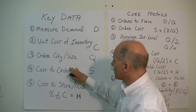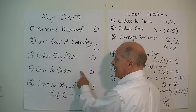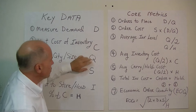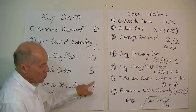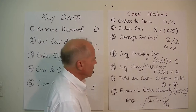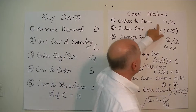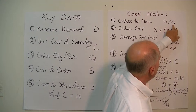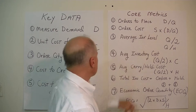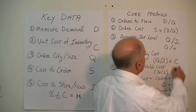Once we have the data points D, C, Q, S, and H collected, we can apply core metrics. The number of orders placed during the year equals demand divided by order size: D divided by Q. The total order cost equals S — the cost to place one order — times D divided by Q, the number of orders placed during the year.